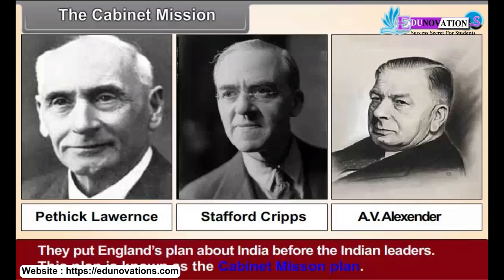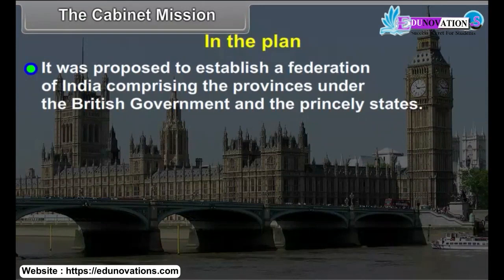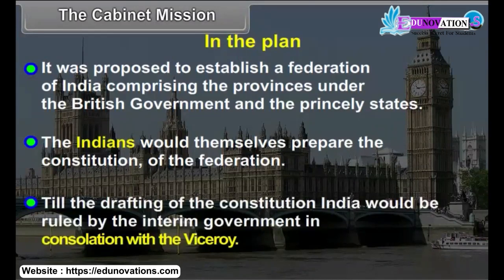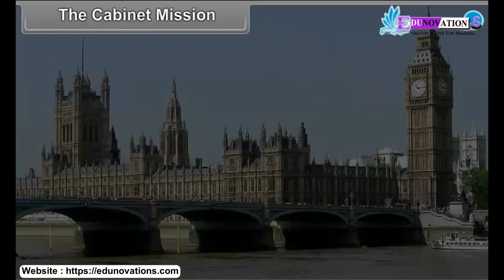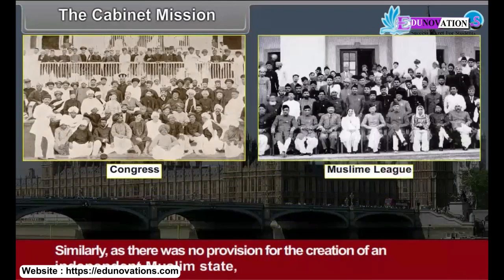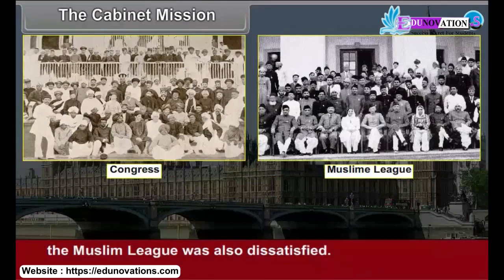This plan is known as the Cabinet Mission Plan. It was proposed to establish a federation of India comprising the provinces under the British government and the princely states. The Indians would themselves prepare the constitution of the federation. Till the drafting of the constitution, India would be ruled by the interim government in consultation with the Viceroy. Some of the provisions in the plan were not acceptable to the Congress. Similarly, as there was no provision for the creation of an independent Muslim state, the Muslim League was also dissatisfied. Thus, the Cabinet Mission Plan was not accepted in its entirety.